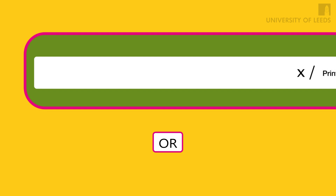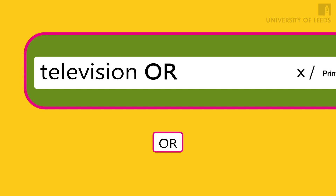What can you do if you have too few results or none at all? First of all, try different keywords. You can include alternative keywords in your search by combining your terms with the word OR. For example, by searching for television OR TV, you can broaden the scope of your search to include either or both of those terms.